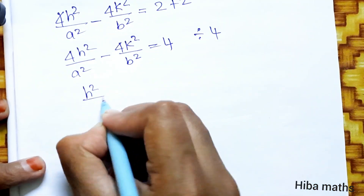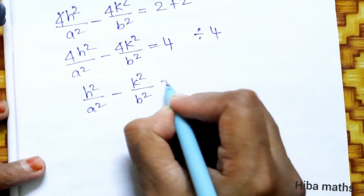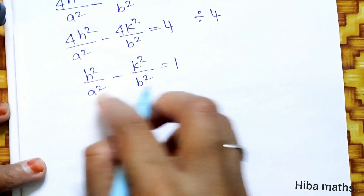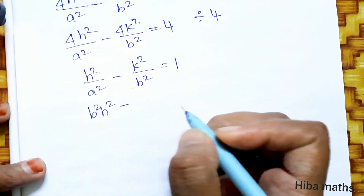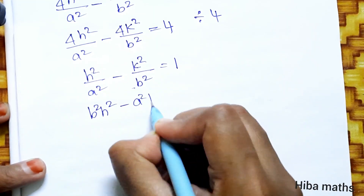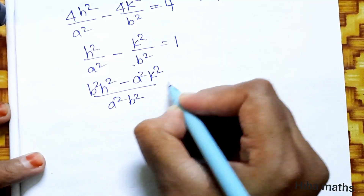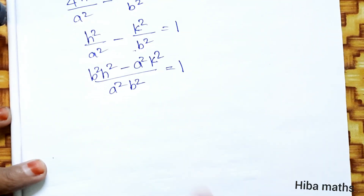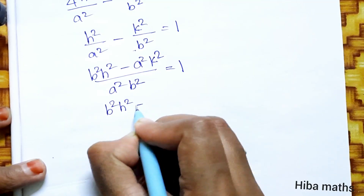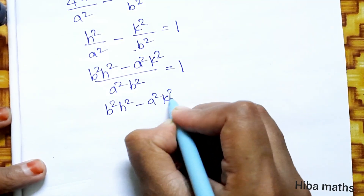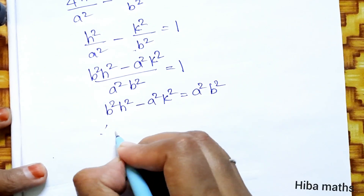Dividing both sides by 4: h²/a² - k²/b² = 1. Cross multiplying: b²h² - a²k² divided by a²b² = 1, which gives b²h² - a²k² = a²b².